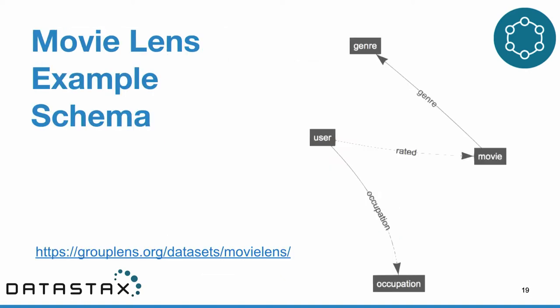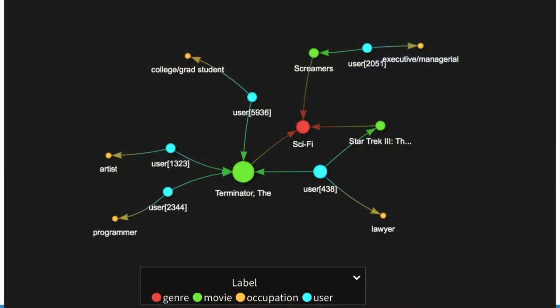We'll use the MovieLens example, which has a set of movies rated by users. Users have occupations, and movies have genres. For example, we have Star Trek movies that are sci-fi, Terminator movies that are also sci-fi, and users who rate them — with occupations like artist, programmer, or college grad student.